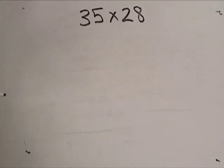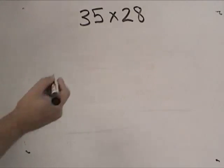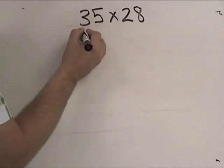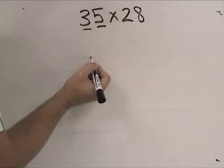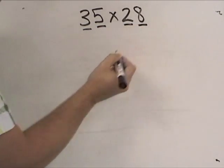There's a lot of different multiplication strategies that we can try. One way we can do it is we can break up these numbers. 35 can be 30 plus 5, 28 can be 20 plus 8.